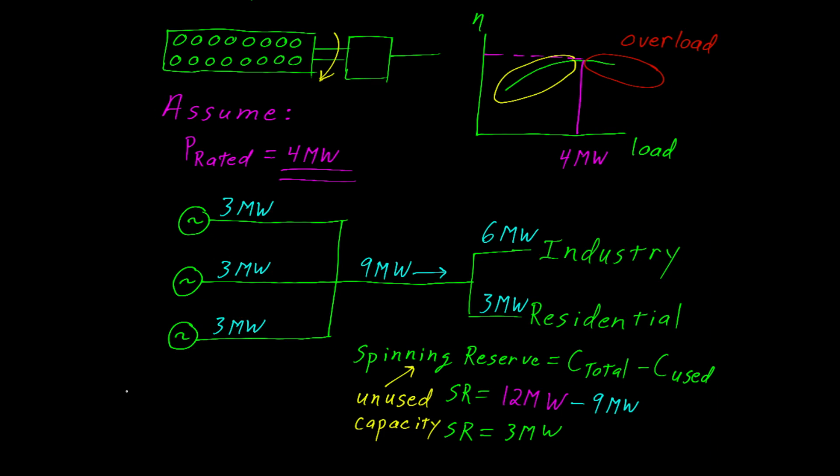While we're here talking about spinning reserve, let's modify this system ever so slightly. Let's add a backup battery. Here we have a battery and a power converter. The power converter takes the direct current from the battery and converts it to alternating current, which can then be fed into the rest of the grid.